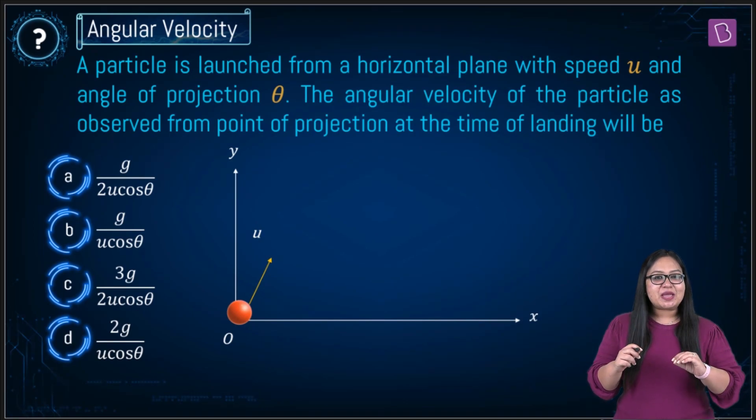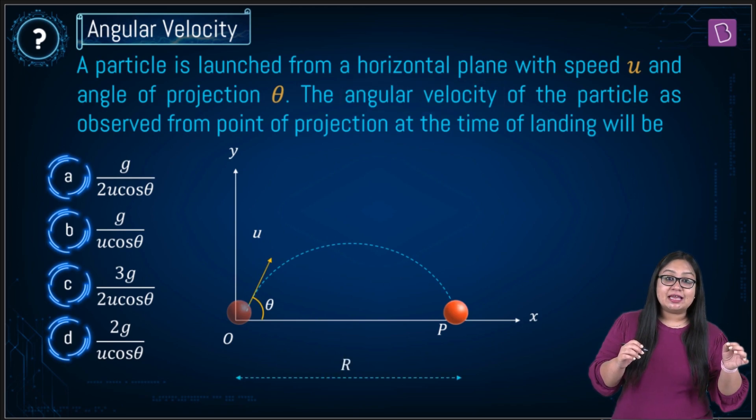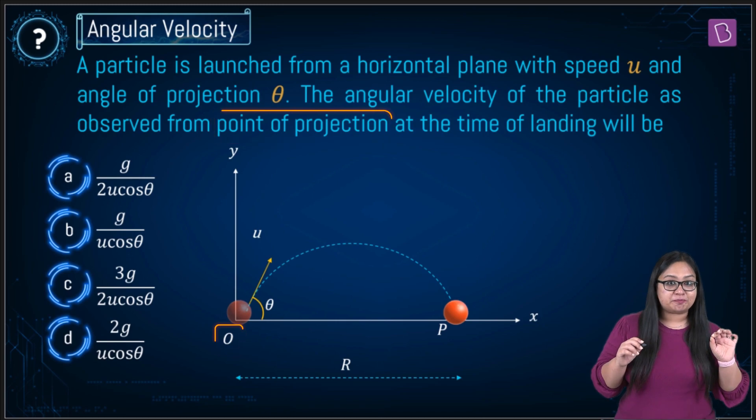Hello students! Here we have a particle launched from a horizontal plane with initial velocity u at an angle theta. We have to find out its angular velocity at the time of landing taken from the point of projection.